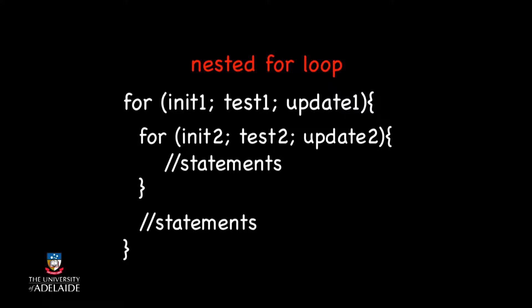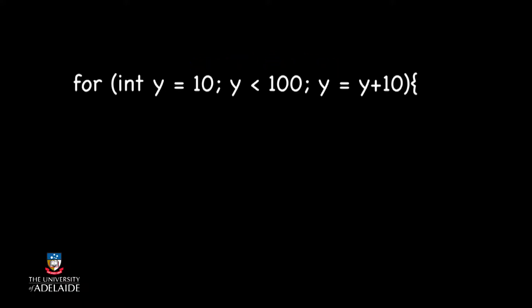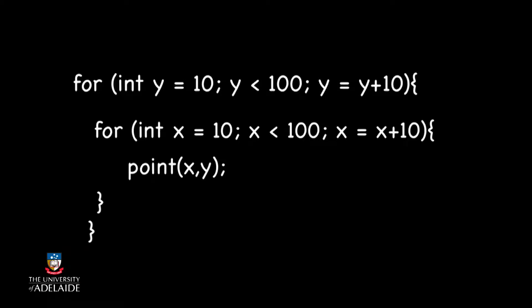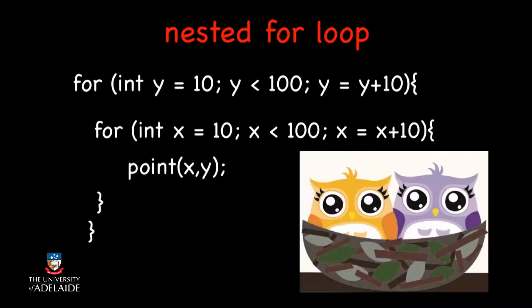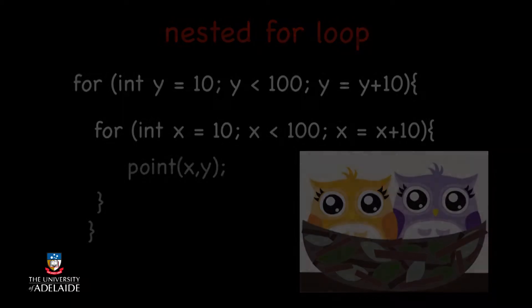So to move down on each line, remember we need to change the y, we will write something like this. To move horizontally, remember we need to change the x to draw each point, we will write something like this. This is called a nested for loop because the first loop forms like a little nest for the second one. We're not very original here.